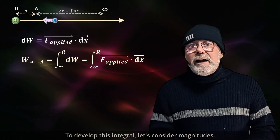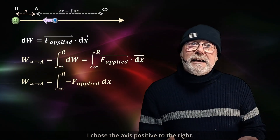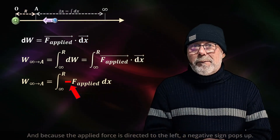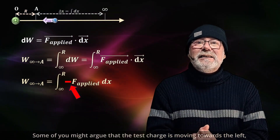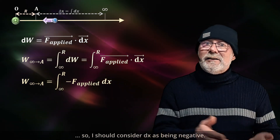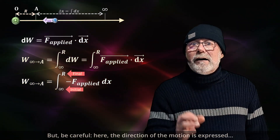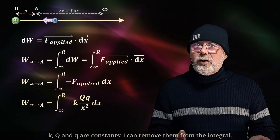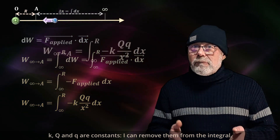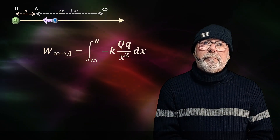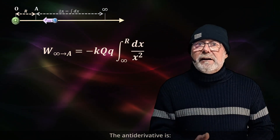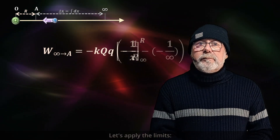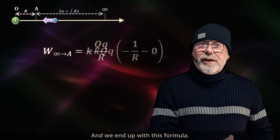To develop this integral, let's consider magnitudes. I chose the axis positive to the right, and because the applied force is directed to the left, a negative sign pops up. Some of you might argue that the test charge is moving towards the left, so I should consider dx as being negative. But be careful — the direction of motion is expressed in how the limits of the integral are ordered. K, big Q, and little q are constants, so I can remove them from the integral. The antiderivative gives us, applying the limits, the final formula.